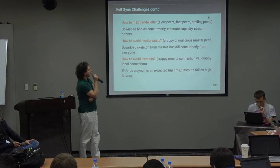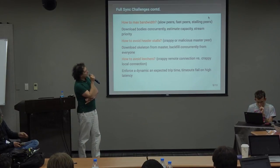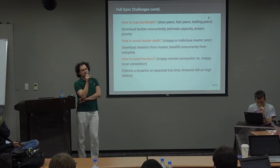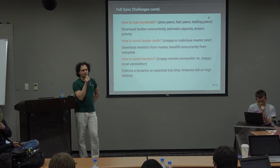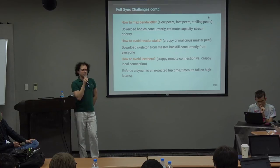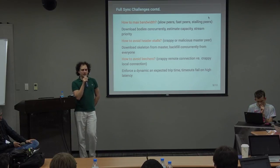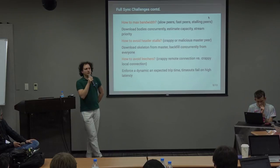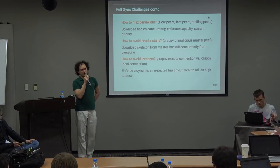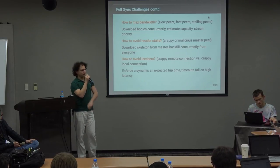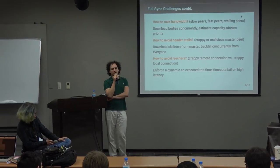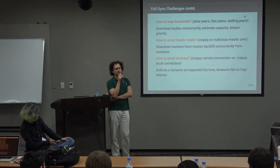To solve this, Geth constantly tries to estimate the capacity and bandwidth of each peer. When downloading concurrently, if we know a peer is fast we ask for more data; if it's slow we ask for less. The goal is to keep that download stream constantly running.